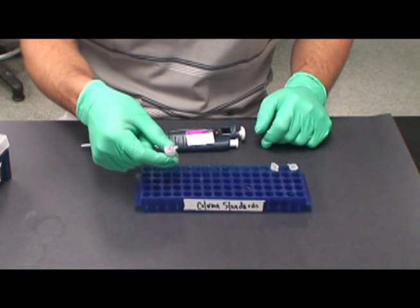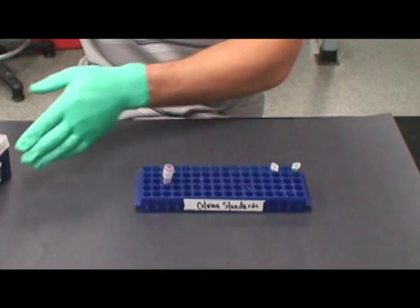Next, add 2 microliters of 10x fast digest buffer into both tubes.